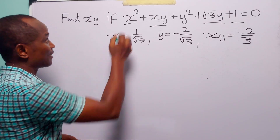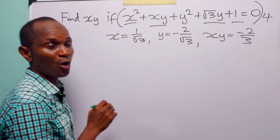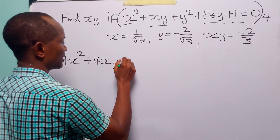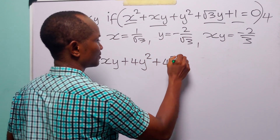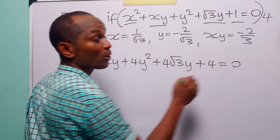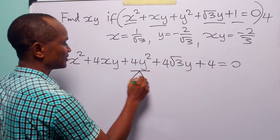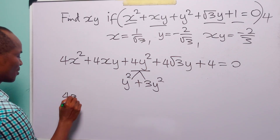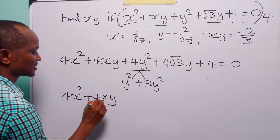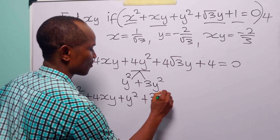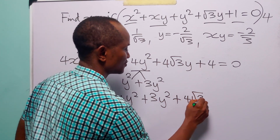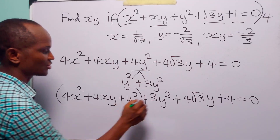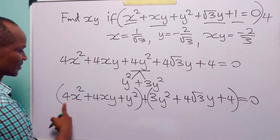Another way of solving this problem is to start by multiplying through the equation by 4. When we do that we have 4x squared plus 4xy plus 4y squared plus 4 root 3y plus 4 equals 0. Now let us group this equation into two units and factorize.